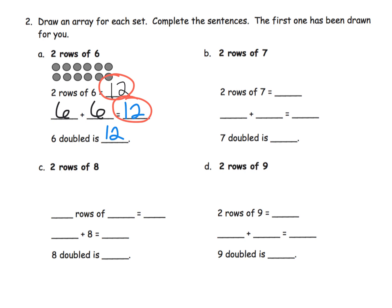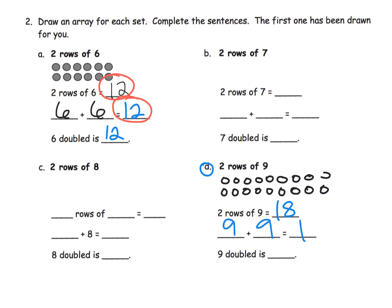Let's look at two rows of nine — 1 through 9 in each row. Two rows of nine equals 18, so that's 9 plus 9 equals 18, and nine doubled is 18. This is just really developing an understanding of evens and odds — even numbers always have every piece with a partner, like every dot has another partner in the other row. Every number has a partner, much like those Numicon pieces.